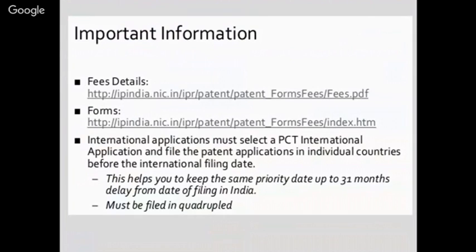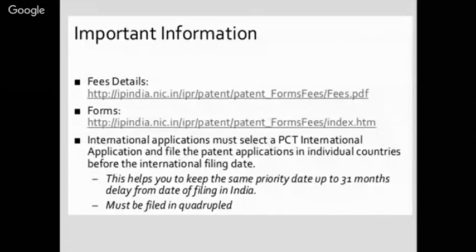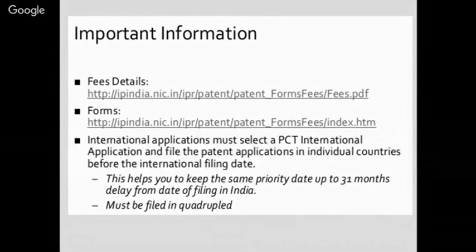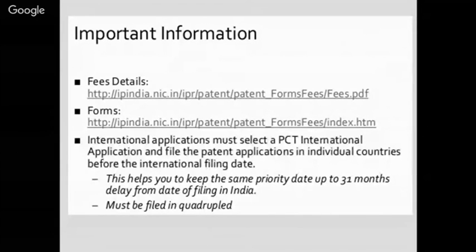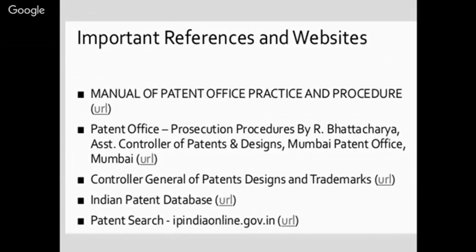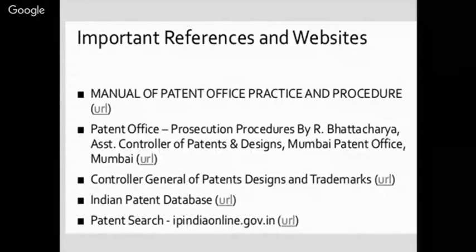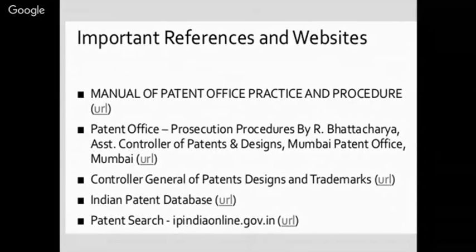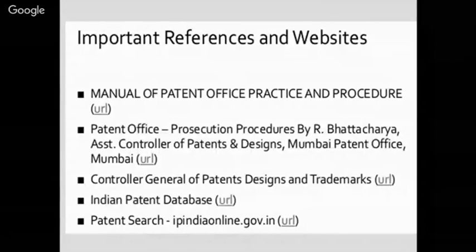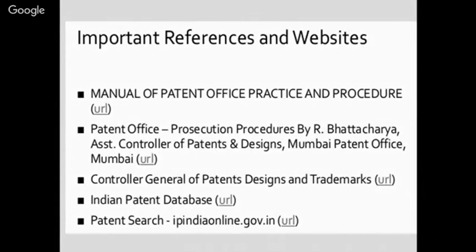Fee details for applying or filing patents can be found at ipindia.nic.in, from where forms can also be downloaded. For an international application, select PCT international application and file in individual countries before the international filing date. Important references for this presentation include the Manual of Patent Office Practices and Procedure, various patent offices, Controller Journal of Patent Design and Trademarks, the WIPO website, and the Indian patent database and patent search tools. Thank you for listening to this session — the house is now open for question and answer.